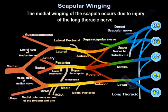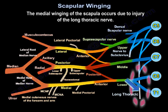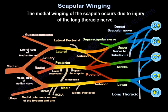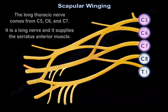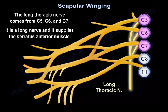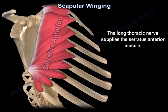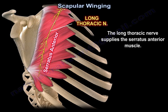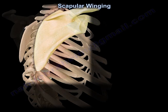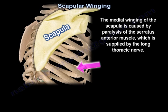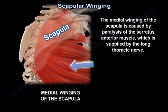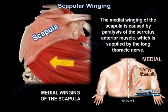Medial winging of the scapula occurs due to injury of the long thoracic nerve. The long thoracic nerve comes from C5, C6, and C7. It is a long nerve and it supplies the serratus anterior muscle. Medial winging is caused by paralysis of the serratus anterior muscle, which is supplied by the long thoracic nerve.